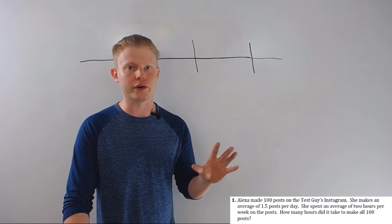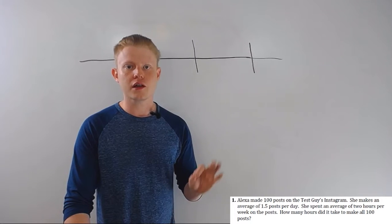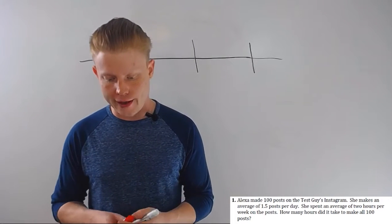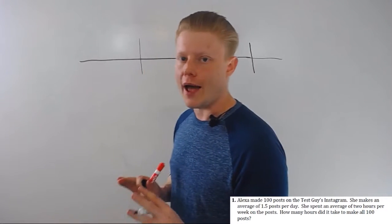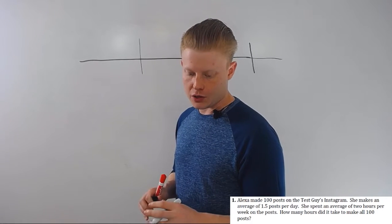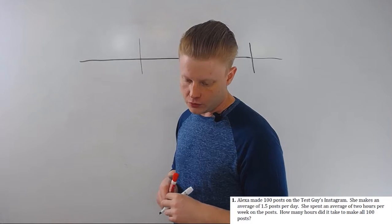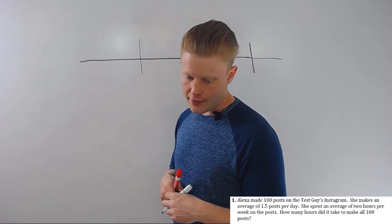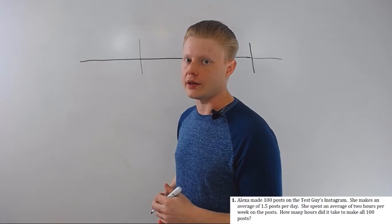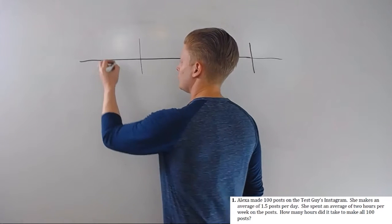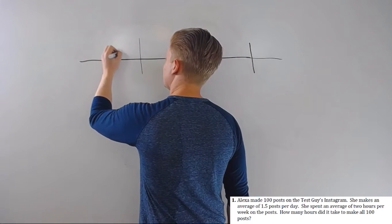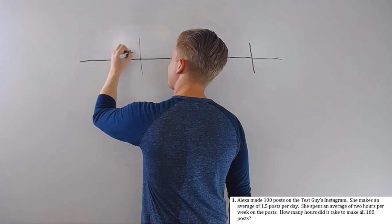So when you're doing dimensional analysis, you have to get things to cancel out. We start with posts—that's the thing that we've got, the unit, the number. And then we're looking for hours, so we want to cancel everything but hours. So I've got posts here, right, and I've got that—that's a solid number.